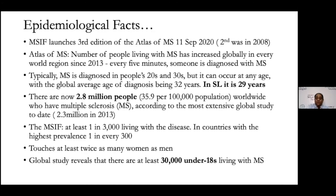1 in 3000 people are supposed to be living with this disease, though this varies by country. MS is twice as common in women as in men. Although generally thought to be a disease of adults, children are also affected — approximately 30,000 children under the age of 18 are living with MS globally. Even in Sri Lanka, children are affected by this disease, in smaller numbers than adults.